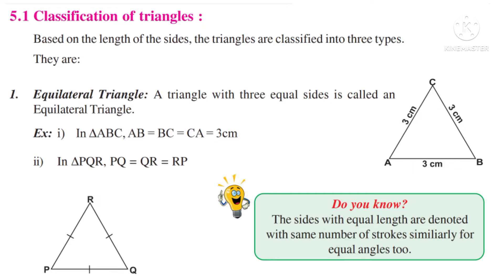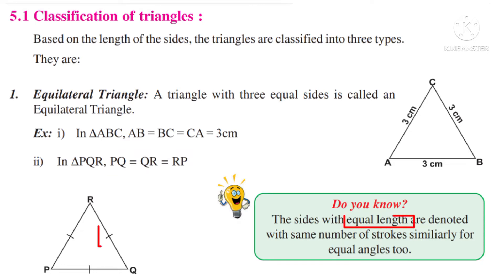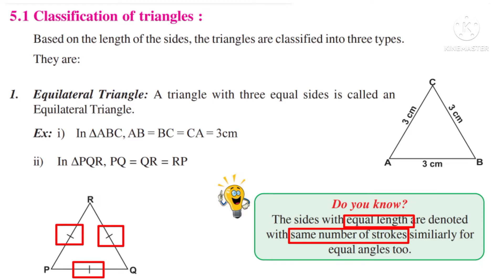In triangle PQR, PQ = QR = RP. All are of equal length, so they are represented by the same number of strokes on the sides. So triangle PQR is also an equilateral triangle.